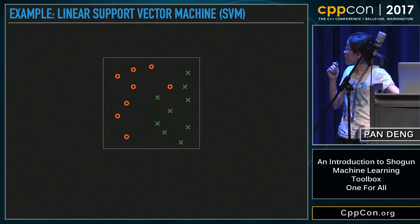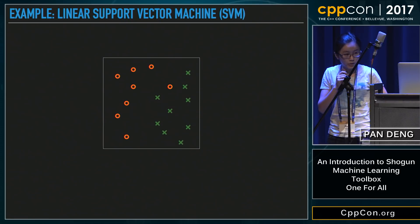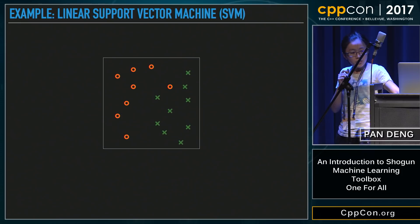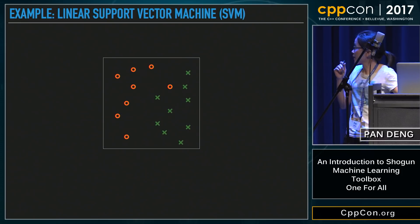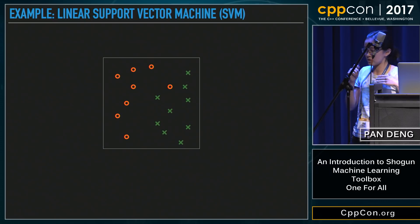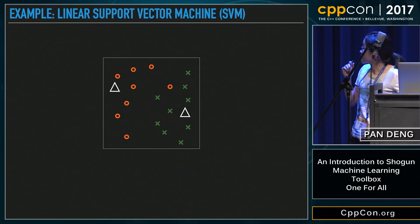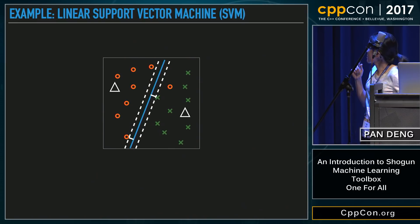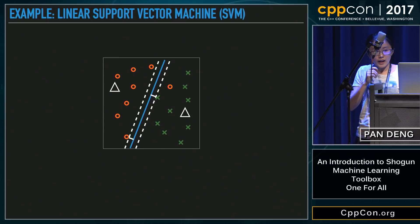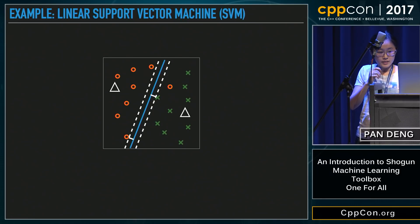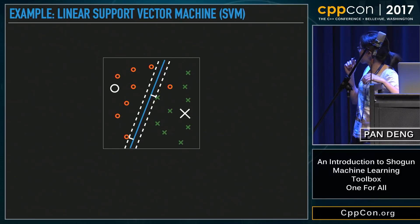Before I start, let's take a step back to look at a simple example of machine learning. Imagine you have two types of dots on a plane and you want computers to learn how to distinguish them and predict the types of new dots coming in. With the classic support vector machine method, or SVM, we can draw a line based on the distance between the two groups, and the method can also provide predictions of different dots based on that line.